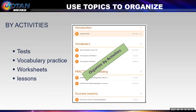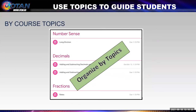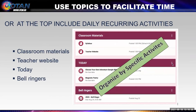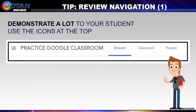Or you can see a classroom organized by activities — namely introduction, vocabulary, practice, practice reading, success lessons. Or a classroom organized by topic in a given subject: number sense, decimals, fractions. Or topics organized by reoccurring activities. You could have a topic called classroom materials on top and include the syllabus and a link to the class website, assignments for today — each day that activity moves down, leaving the daily focus at the top. Or a topic for bell ringers and another for end-of-day reflections. There are a lot of choices and they make things interesting and easier for the students.